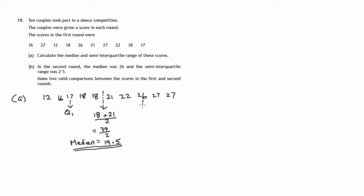And we do the same for the upper half of the data. The median of the upper half is 26. That's what's called Q3, the upper quartile. So we've got lower quartile.